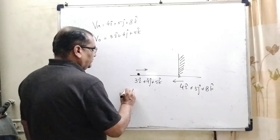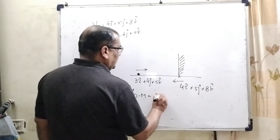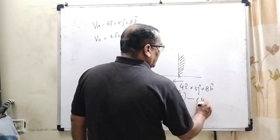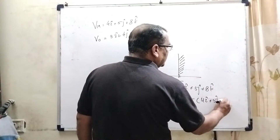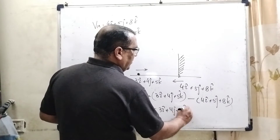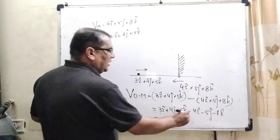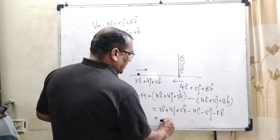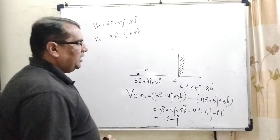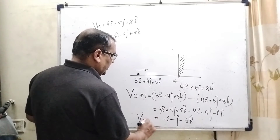First of all, we find the relative velocity of the object with respect to the mirror. That is: (3i-cap plus 4j-cap plus 5k-cap) minus (4i-cap plus 5j-cap plus 8k-cap), which becomes minus 1i-cap minus 1j-cap minus 3k-cap. This is the relative velocity of the object with respect to the mirror.